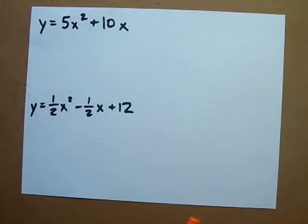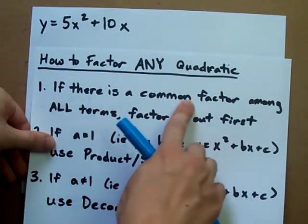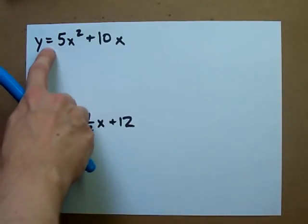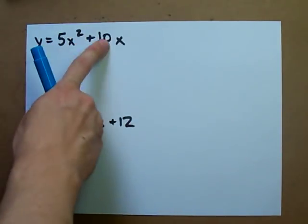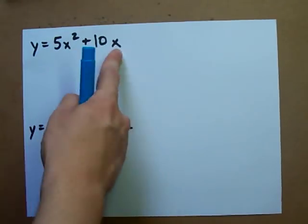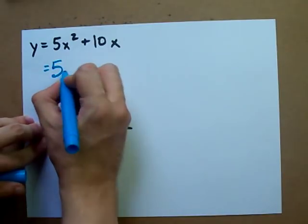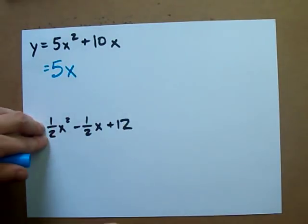Want to do a couple more here. Is there a common factor among all the terms? Why, yes, there is. There's a common 5. Both of these are divisible by 5. And there's an x in both of them. We can pull out a 5 and an x from both of these terms.